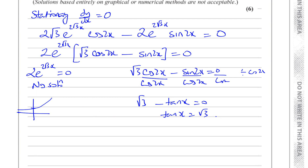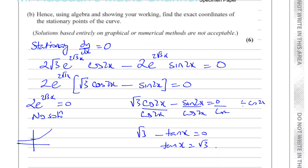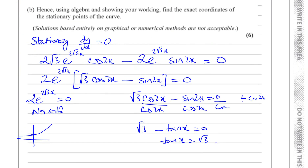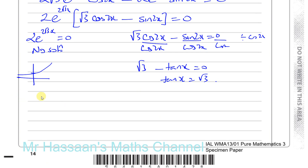Now we must solve this for the limits 0 to pi. However, careful — it's tan of 2x, not tan of x, so we must be very careful not to lose solutions.